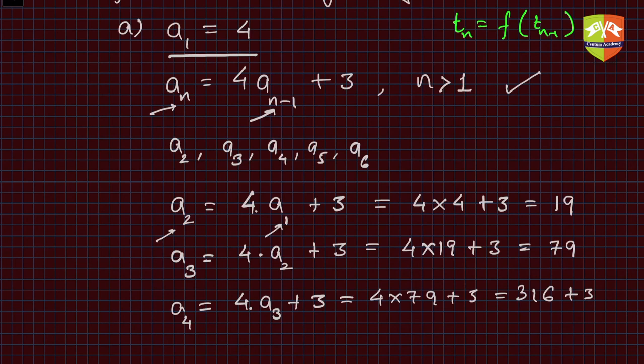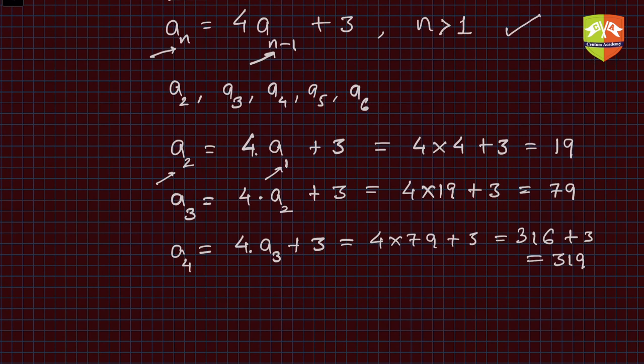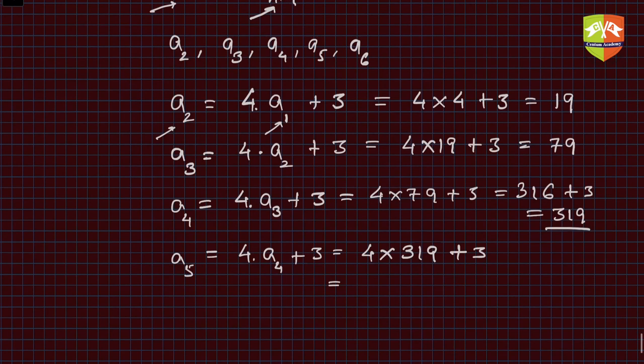You are simply deploying values. a5 is nothing but 4 times a4 plus 3. Simple arithmetic: 4 times a4—what is a4? 319, we just found out—plus 3. So this is nothing but 1276 plus 3. Hence, it is 1279. Very good.